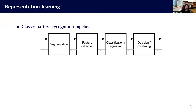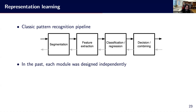In pattern recognition — a field closely related to machine learning but more from an engineering point of view — the classic pipeline, defined in the 1970s, has four main steps: segmentation, feature extraction, classification or regression, and finally decision making or combining results. Each of these modules was historically designed independently, which is a reasonable engineering approach when components must be manually crafted.